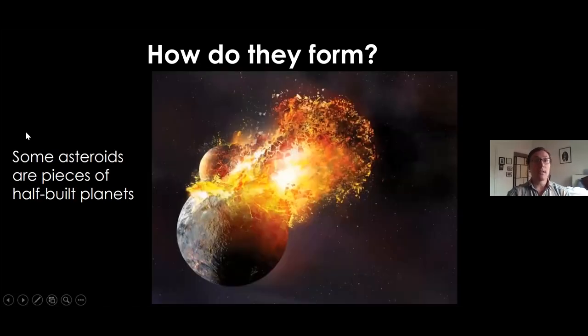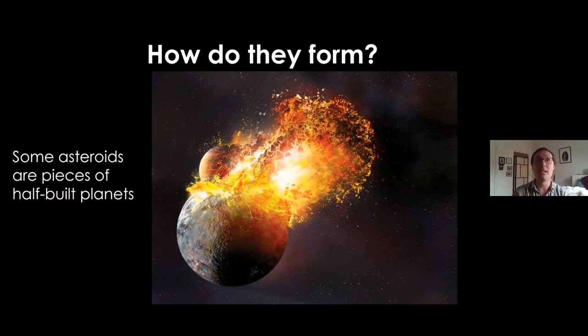Now, some asteroids aren't that primitive type of object. They were actually part of a body that was on its way to becoming a planet. They were half-built when they were smashed apart in a giant impact early in the solar system. They might actually be a piece of a core of a planet. When you're looking at those iron meteorites, that was often from a planet that could have been in the solar system but wasn't, or the crust of one of those planets. A lot of them are fragments of smashed apart, half-built planets.